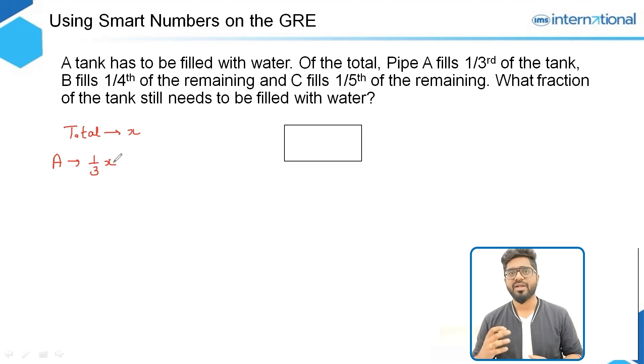B fills one fourth of the remaining. A point to be noted here is that this is not one fourth of the total—not one fourth of x—but one fourth of the remaining. We need to find out what fraction still needs to be filled before. That will be equal to x minus one third of x, which equals two thirds of x, because one third of x has already been filled by Pipe A.